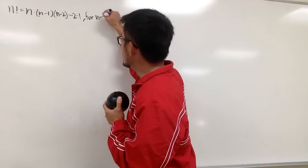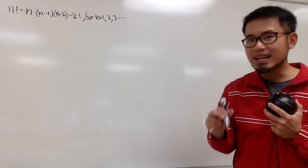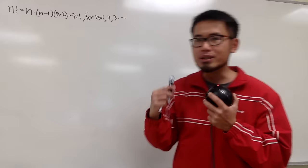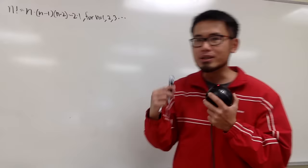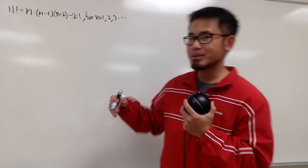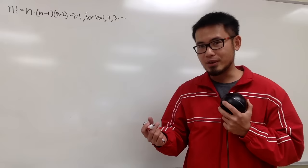Unfortunately, this is only good for n equal to 1, 2, 3, and so on — namely positive whole numbers n. I cannot use this definition to get 0 factorial, nor half factorial, and things like that. But today, we'll see how we can extend the concept of factorial so that we can plug in more values.